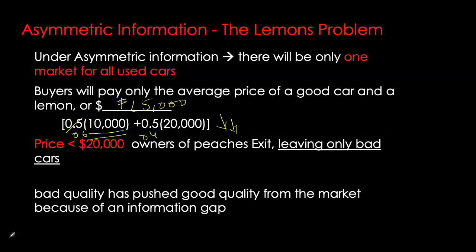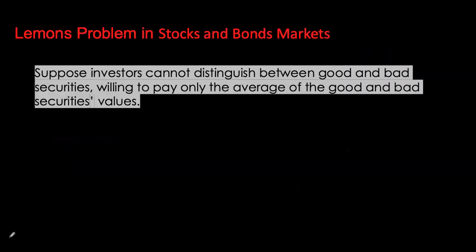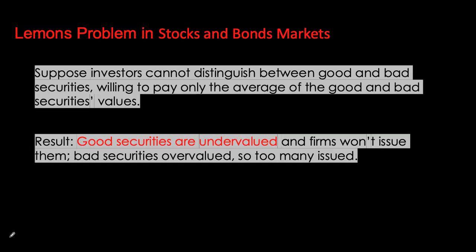This phenomenon — bad quality pushing good quality out of the market as a result of an information gap before exchange — is called the adverse selection problem. Adverse selection is also felt in financial markets. If investors have trouble distinguishing high-profit, low-risk firms from low-profit, high-risk firms, we will have a lemons problem. Owners and managers of good firms have better information than investors, so they know their securities are undervalued in the market and won't bother issuing securities in the first place — good securities are pushed out and only lemons remain.